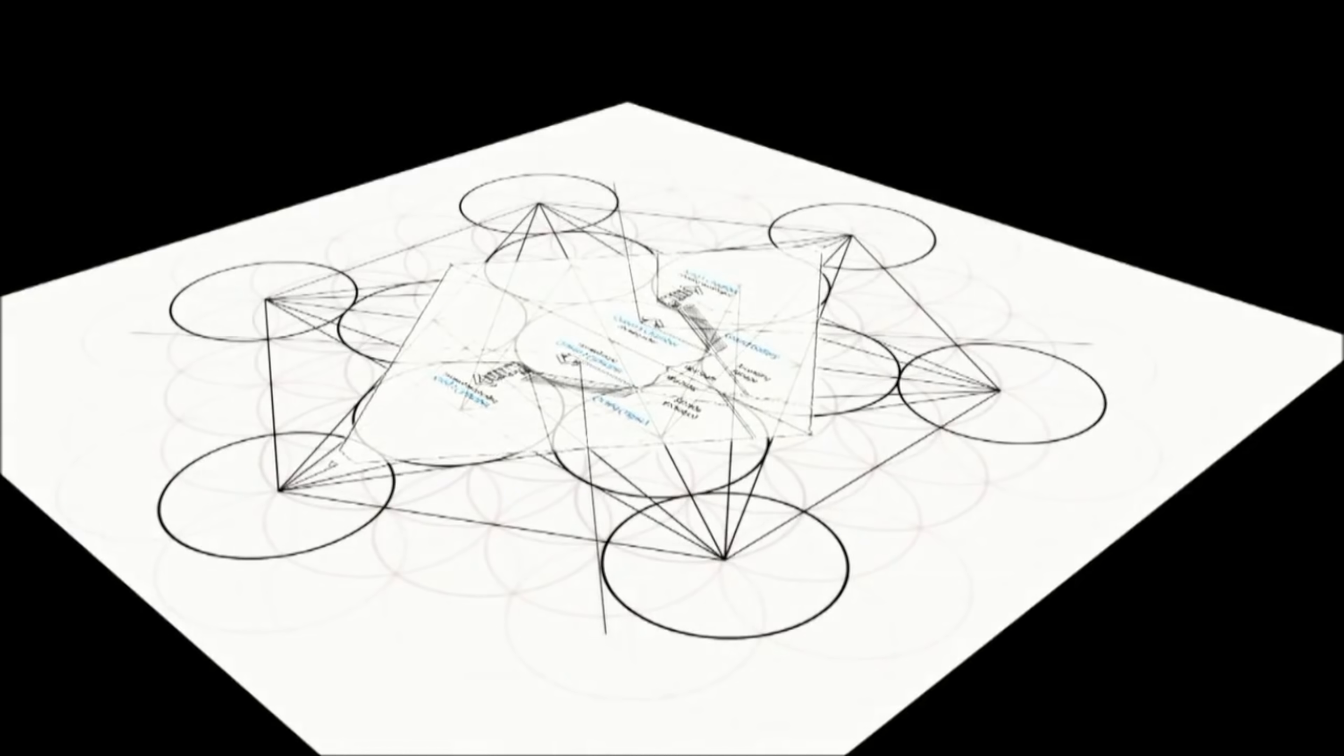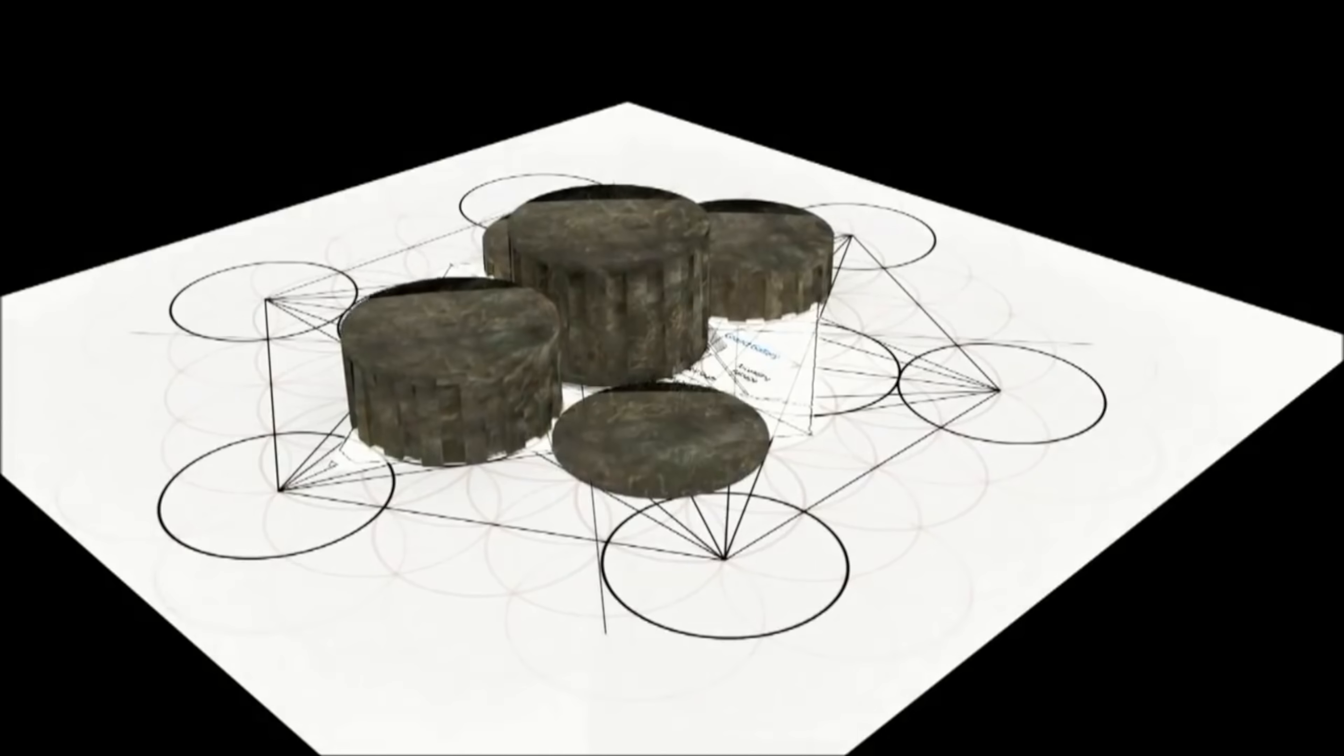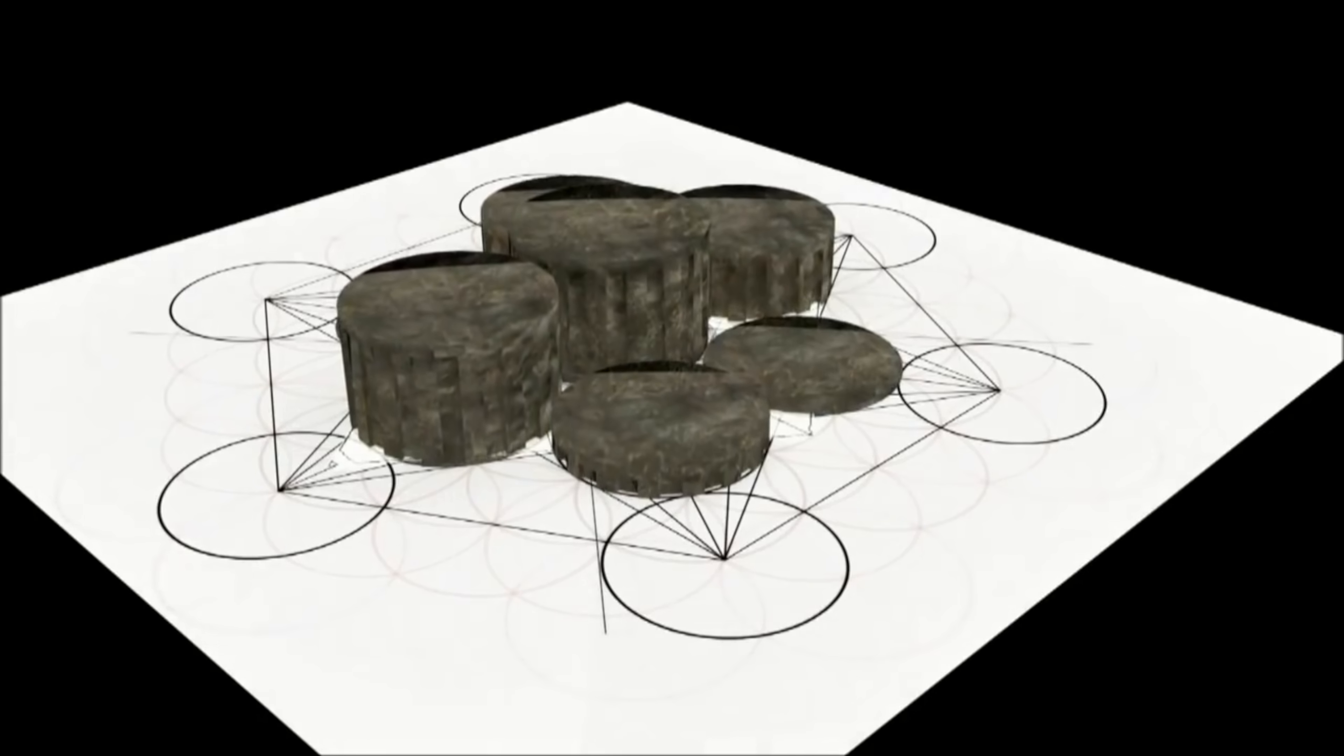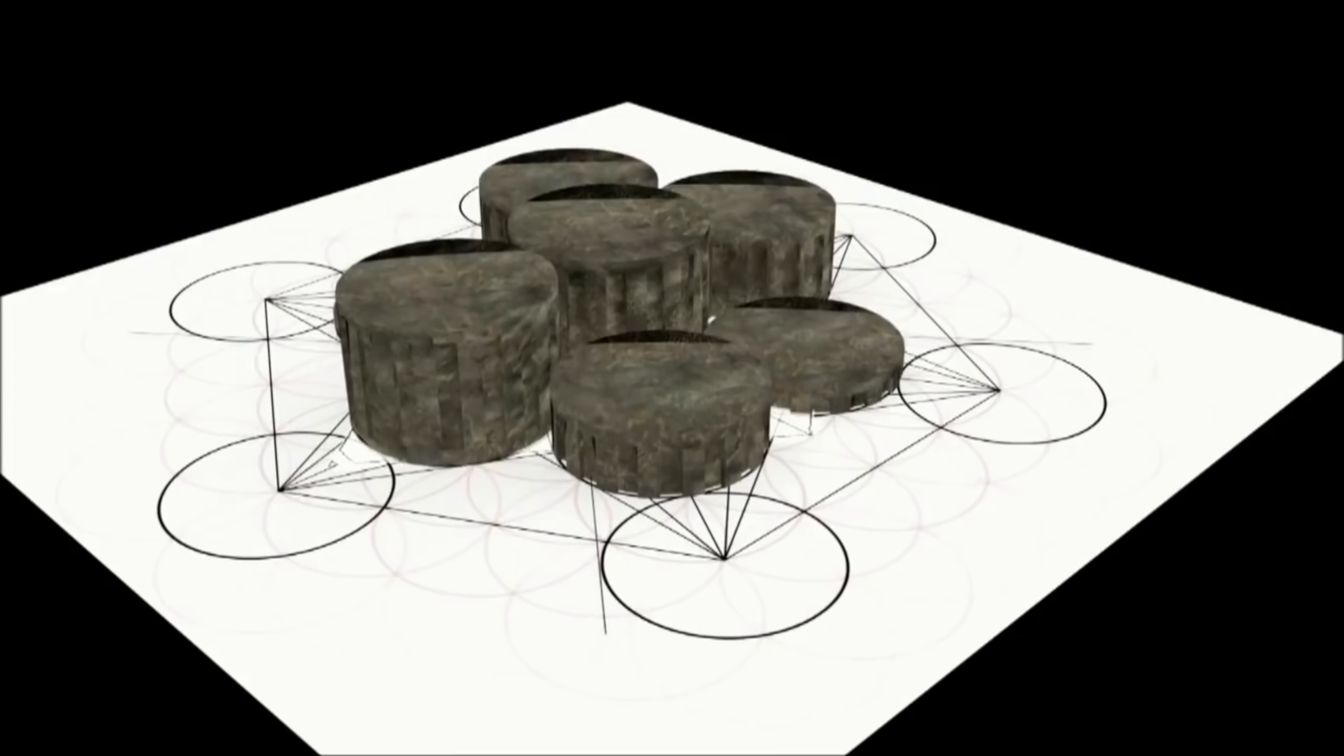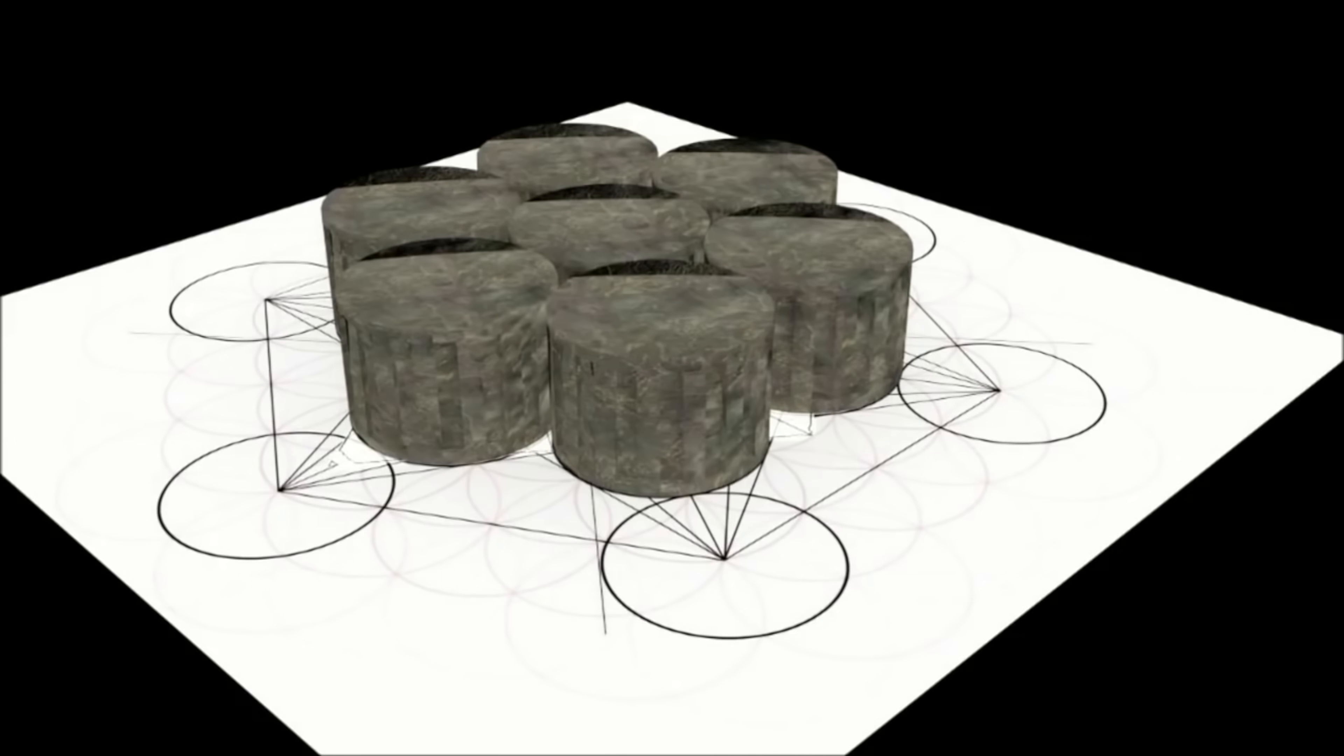If God built the earth, or a creator built the earth, is he going to create it higgledy-piggledy, or is he going to use absolutely perfect geometry and engineering? If the earth is fixed and it's on pillars, why wouldn't it be the magic number seven of them, arranged in perfect fashion?